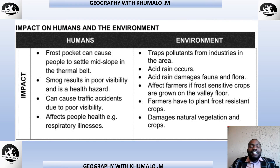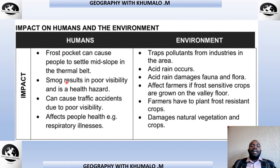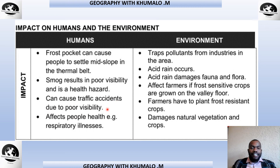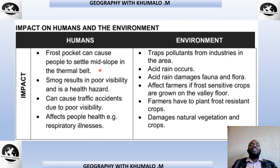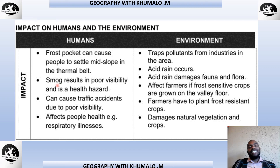Grade 12s, you must understand the impacts of these weather phenomena on humans and the environment. For humans: frost pockets can cause people to settle mid-slope in the thermal belt. Smog results in poor visibility and is a health hazard — it can cause traffic accidents and lead to respiratory illnesses.